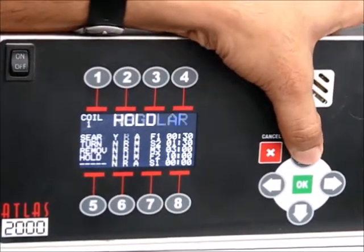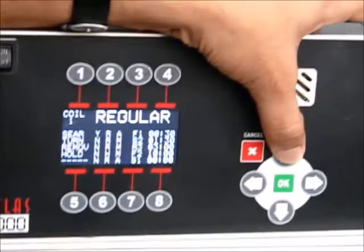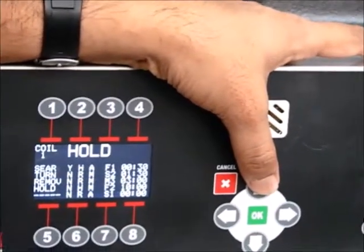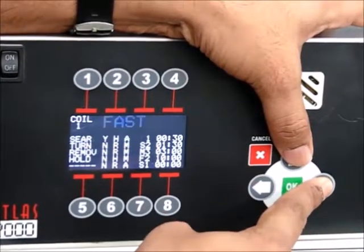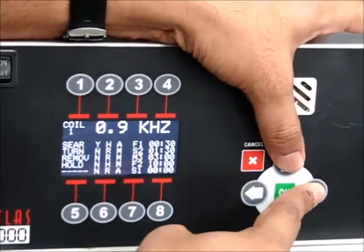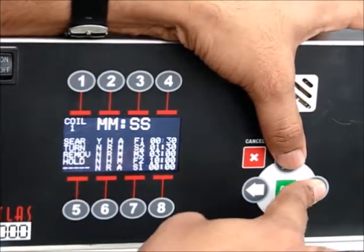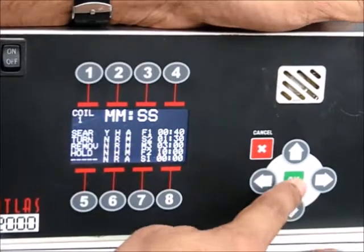Now we are going back to the pre-alarm and we are changing from hold to regular. Now we are moving to the next one which is frequency and then time. So like this, you can set different parameters. Press OK to save the changes.